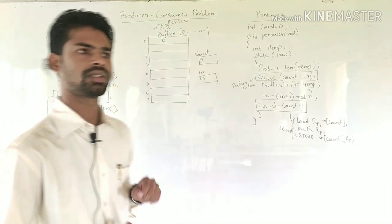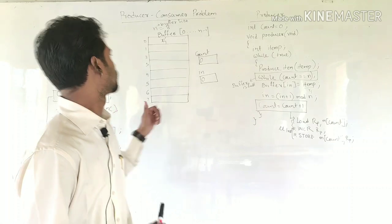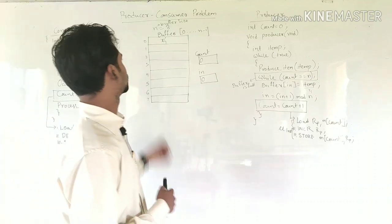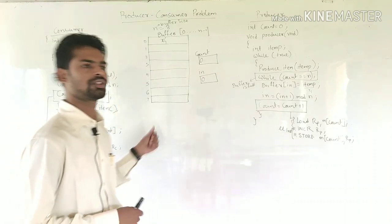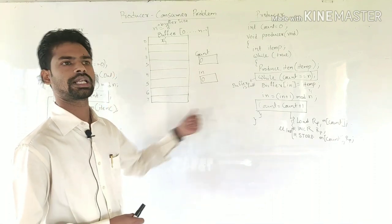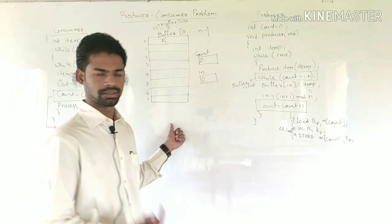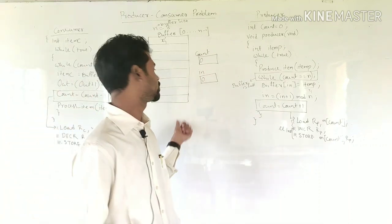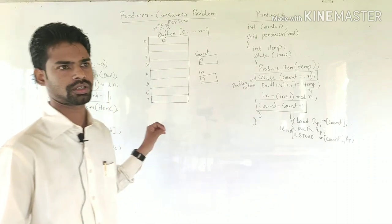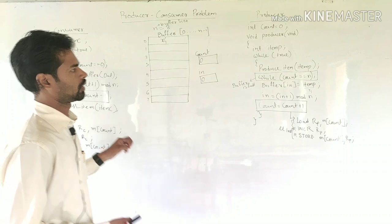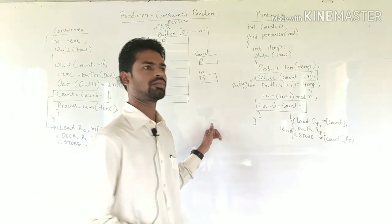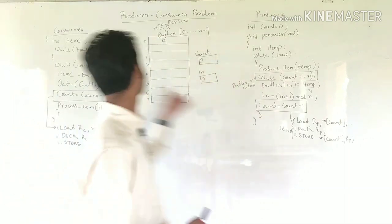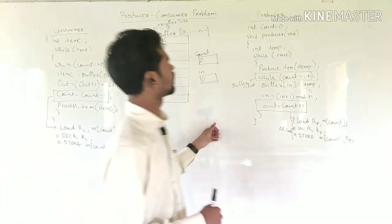The producer-consumer problem is a synchronization problem. There are two conditions: Case one — if the buffer is full, then the producer is not allowed to produce any item. Case two — if the buffer is empty, then the consumer is not allowed to consume any item from the buffer. One important thing: at any point in time, preemption may occur.